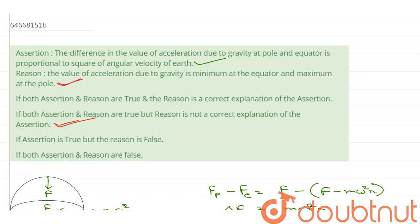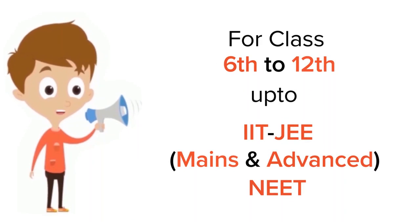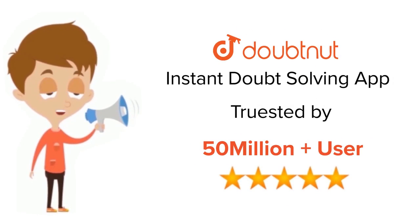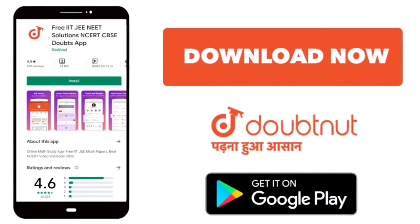That is option number B. For class 6 to 12, IIT and NEET level, trusted by more than 5 crore students. Download Doubtnut app today.